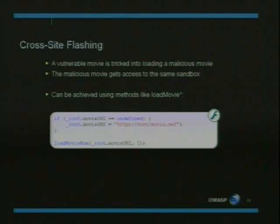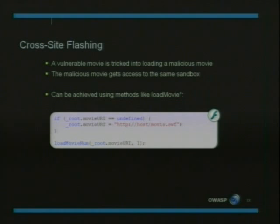Cross-site flashing occurs when a vulnerable Flash movie is tricked into loading a malicious Flash movie from a different domain. This malicious Flash movie can then receive access to the same sandbox as the original movie. Here is an example of a piece of ActionScript code demonstrating this.